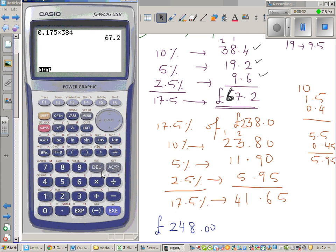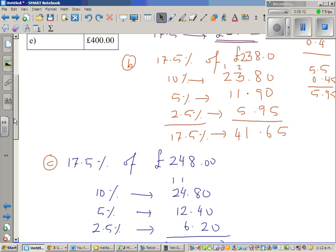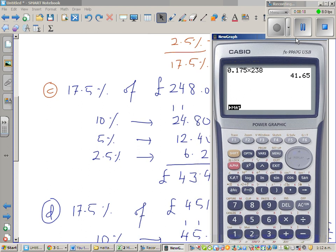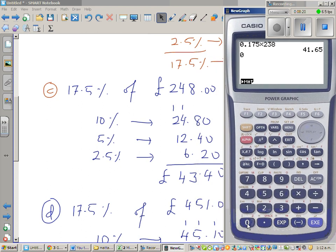For B it is 0.175 times 238. Hopefully I'm right. £41.65, that's fine. For C, 0.175 times 248, which is £43.4. That was right.